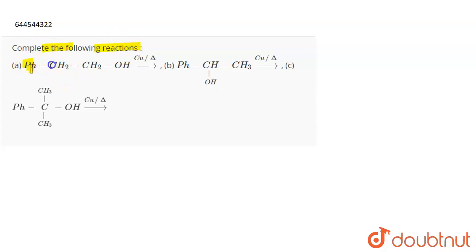The reaction is phenyl CH2-CH2-OH in the presence of Cu, and then when it is heated, what is the product formed? Then part B is phenyl CHOH-CH3, again Cu and heat. And then part C, you have phenyl CH3-C-CH3-OH, and then again Cu and heat. So you have to determine the products that are formed.